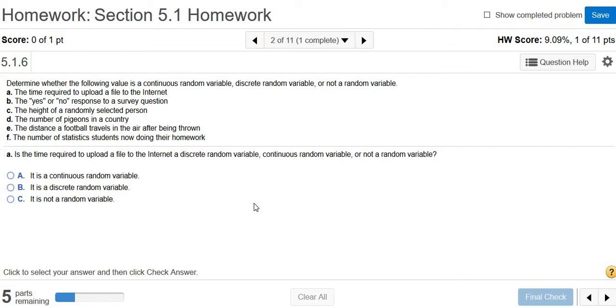Determine whether the following value is a continuous random variable, discrete random variable, or not a random variable. Continuous random variables—their values cannot be counted. Usually these are decimals. Discrete random variables, the definition is that you can count them. You can count the values that it takes on. These are usually whole numbers. And then not a random variable—that would mean that it's not even a number.